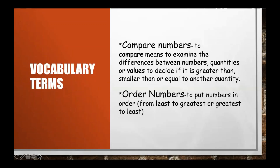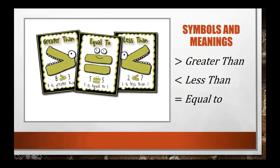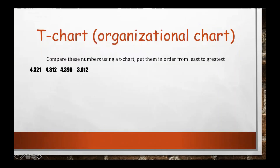Some of you may remember seeing symbols like these before. This one over here is indicating greater than — the picture shows eight is greater than three. This one is our equal to, which shows five is equal to five, so they are equivalent numbers, they are the same. And this one over here is our less than, showing that two is less than seven.